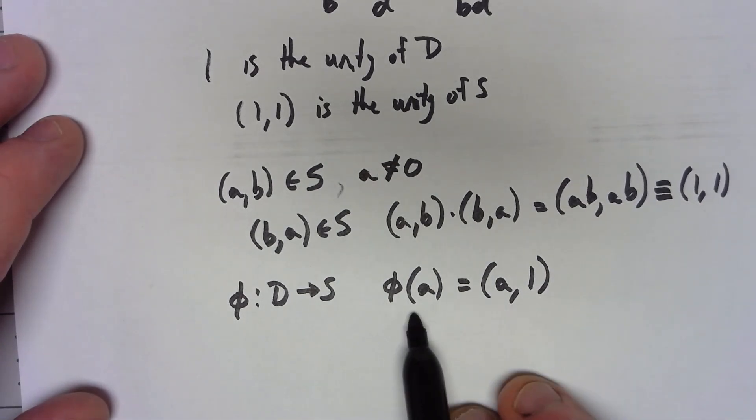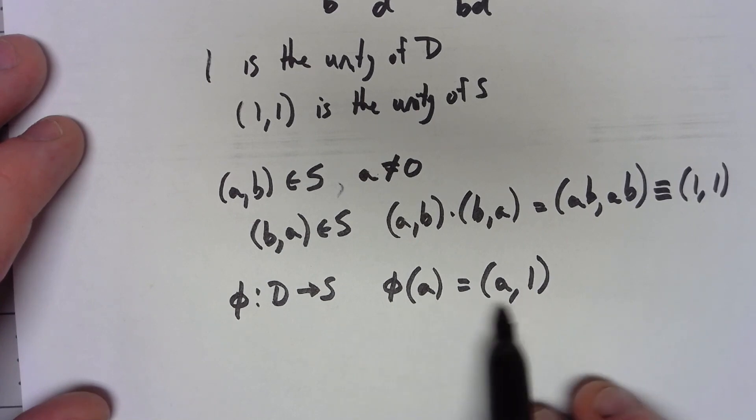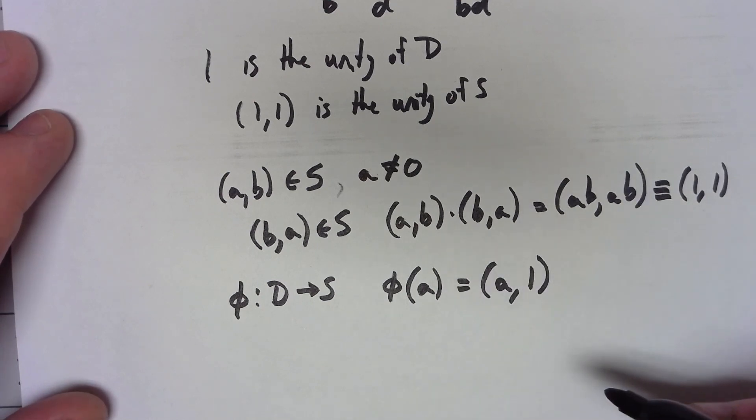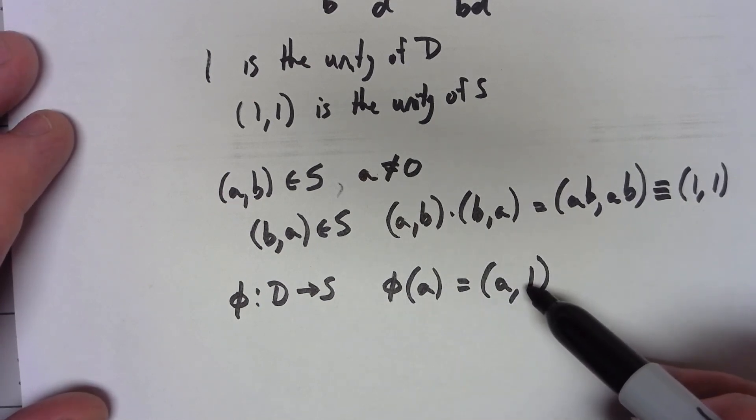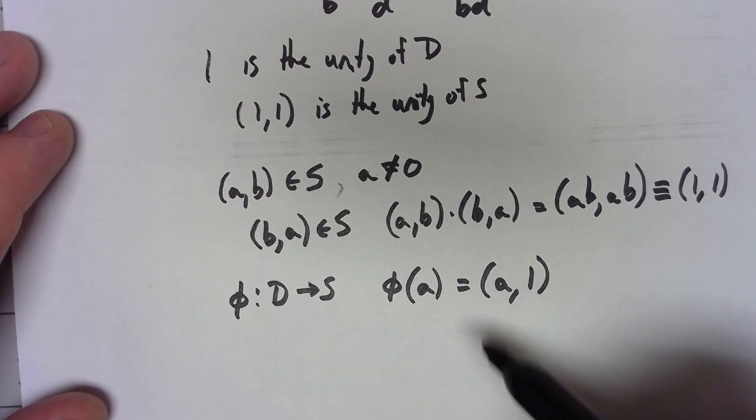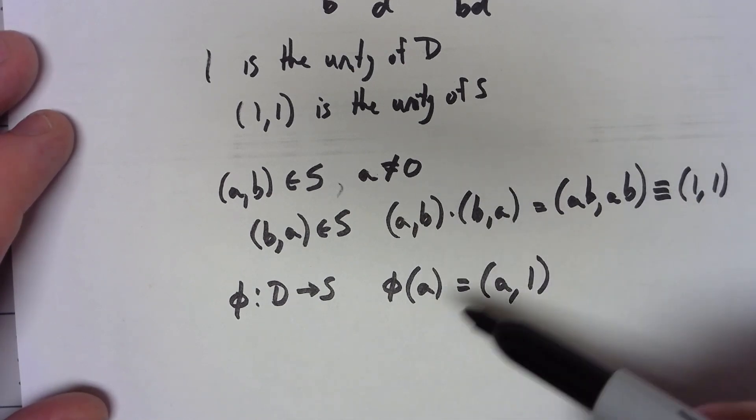It doesn't take too much to show that this thing is both a homomorphism. It's going to be 1 to 1 onto its, well, onto its image and it'd be onto its image by definition. So we would have a homomorphism that's 1 to 1 and onto. This would be an isomorphism.